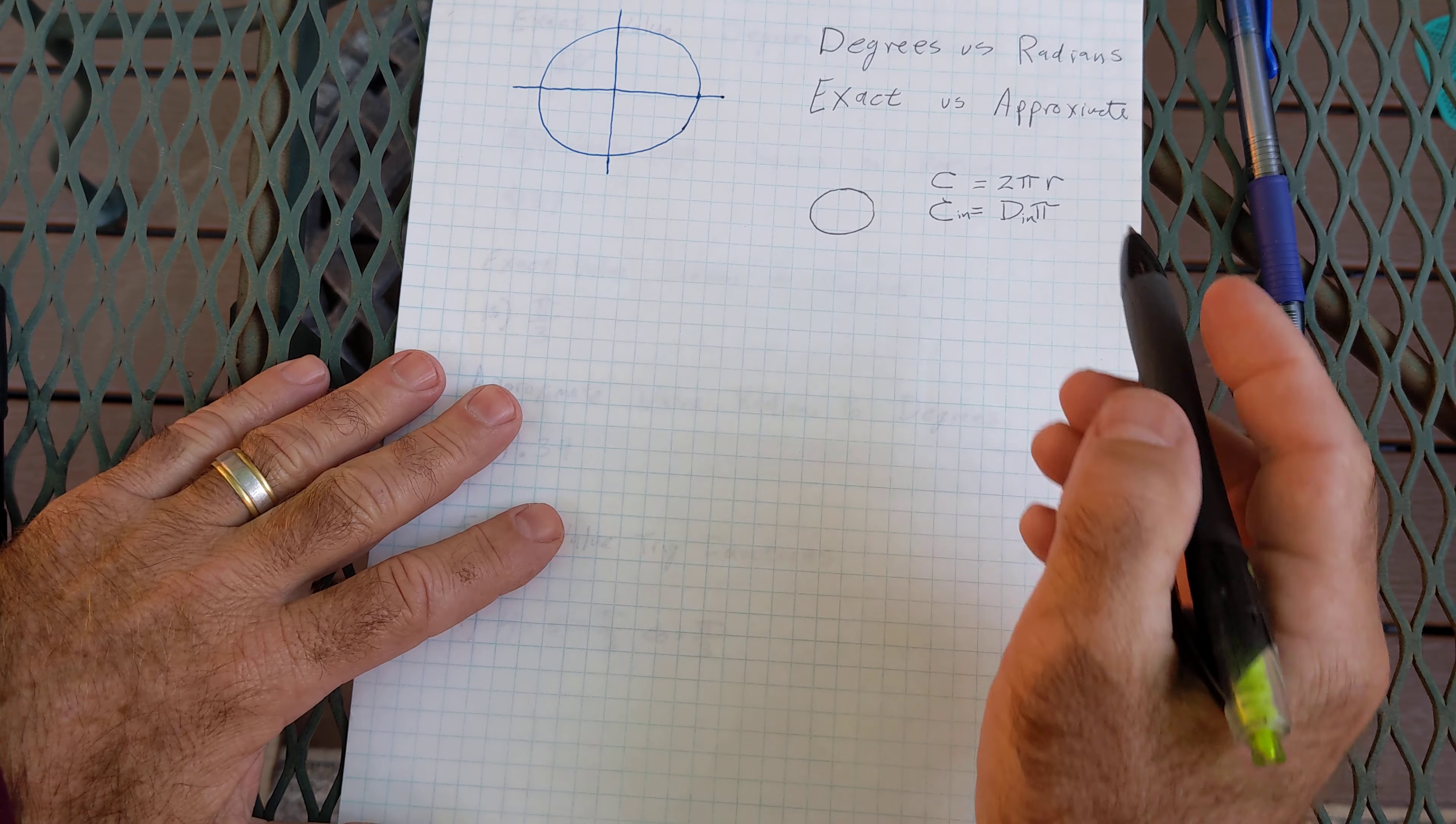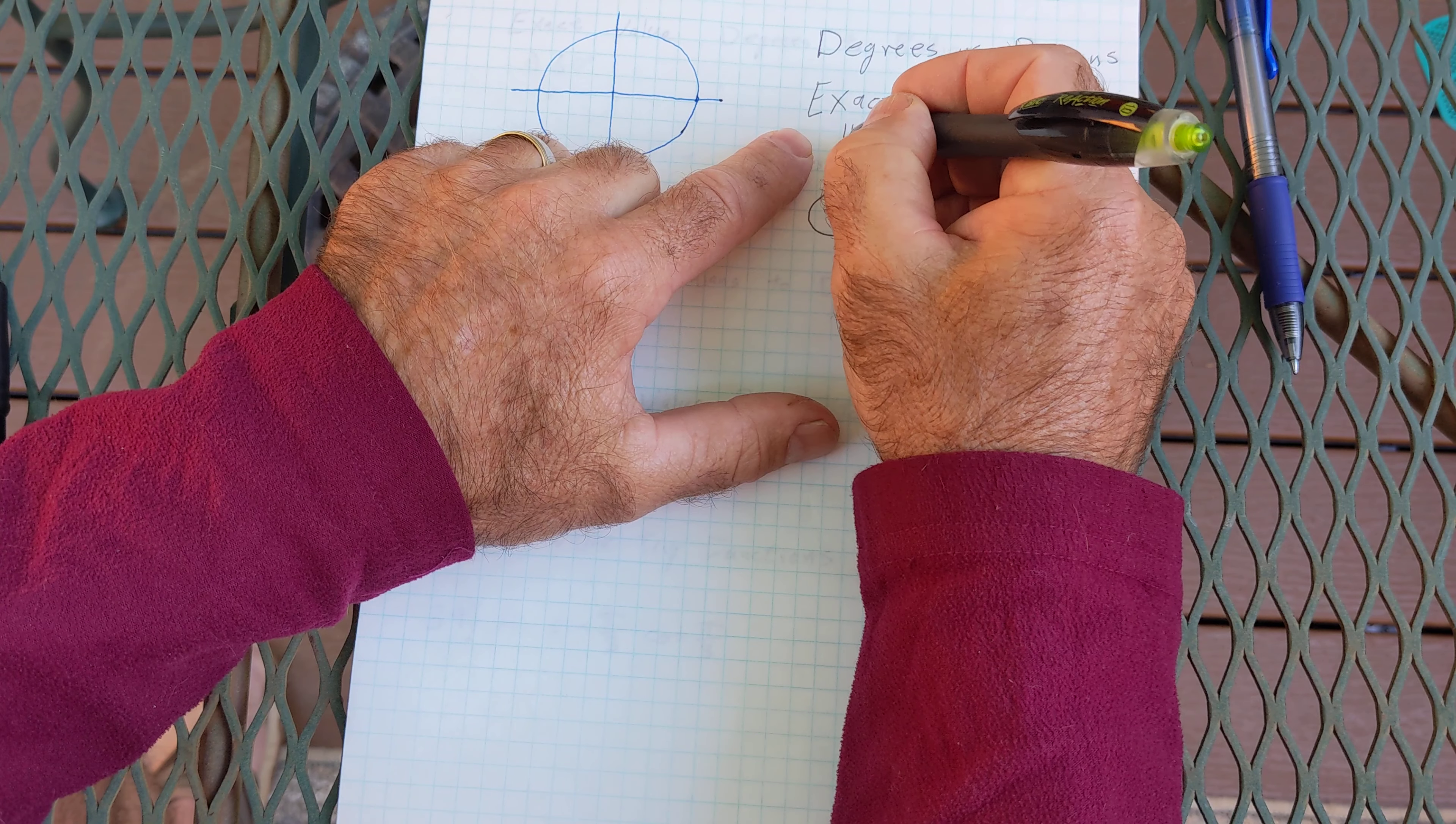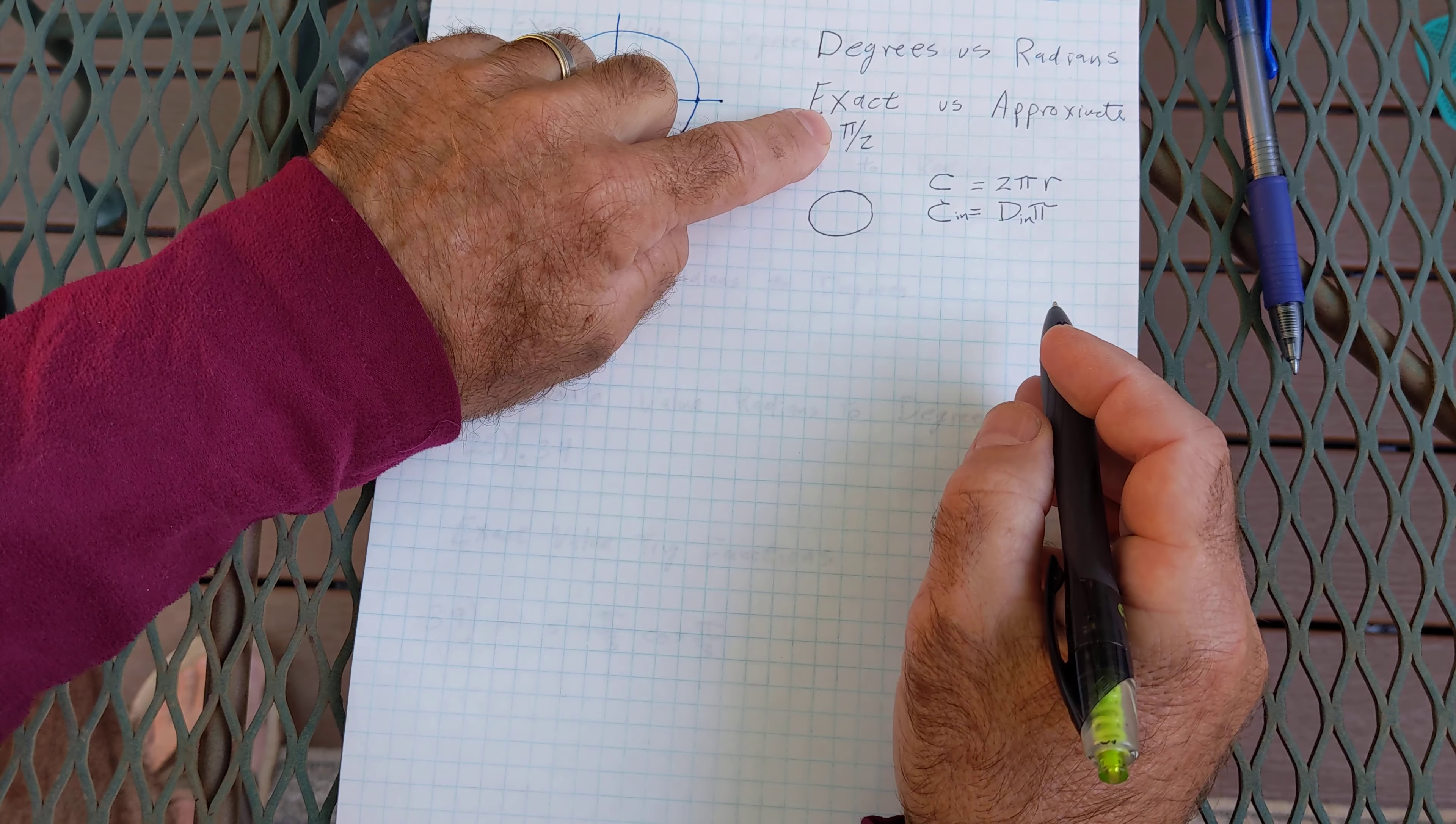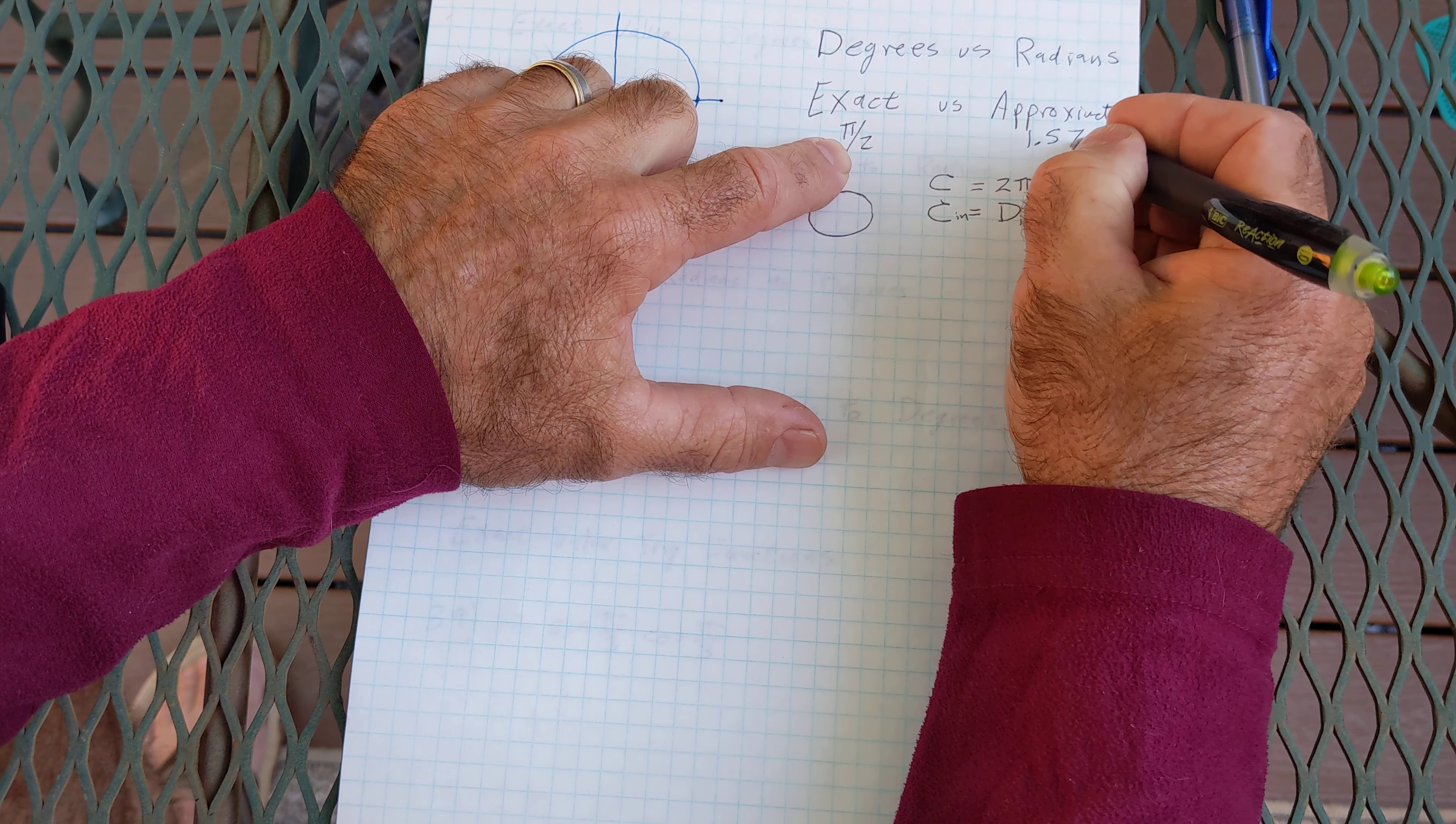First thing I really want to point out that you really need to understand is the difference between exact and approximate. Exact would be something like pi over two without a calculator. Approximate is a decimal approximation you do with your calculator. So something like pi over two you would enter 3.14 divided by two and get the approximate value of 1.57.